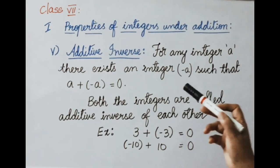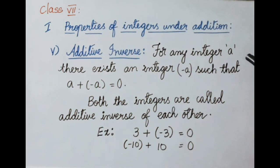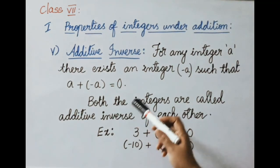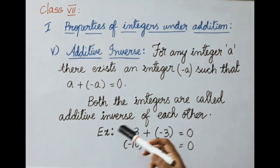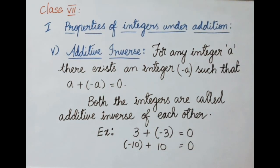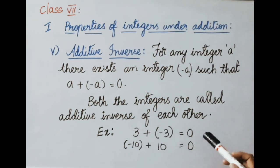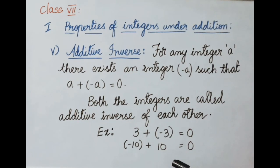Fifth one: additive inverse. For any integer A, there exists an integer minus A such that A plus minus A equals 0. For any integer there is a corresponding negative integer, and when added together they give 0 — so both are additive inverses of each other. Example: 3 plus minus 3 equals 0. And minus 10 plus 10 equals 0.